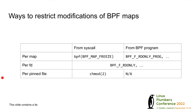A little detour: there are several ways to restrict modifications you can make to a map. I like to think of it from two angles. One is where you're trying to make the modification from — either from a syscall in user space or from a BPF program. The other is the object you're applying restrictions to: per-map (most drastic), per file descriptor — where one FD can be read-only while another FD for the same map is read-write.